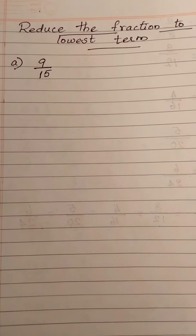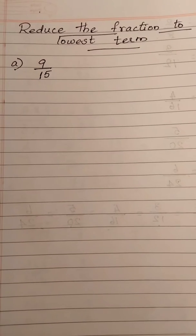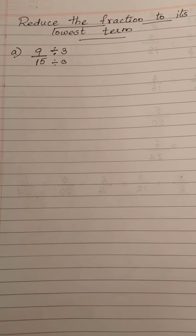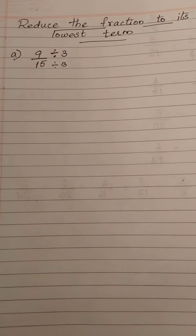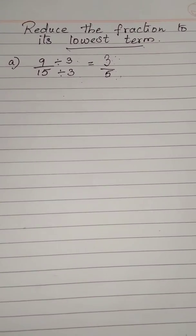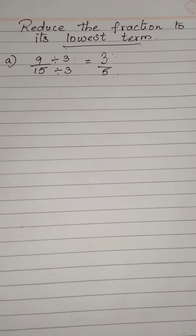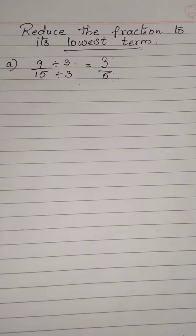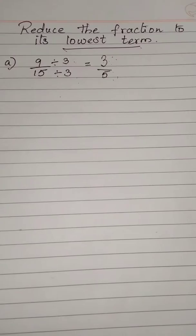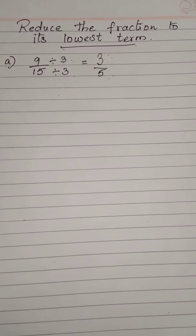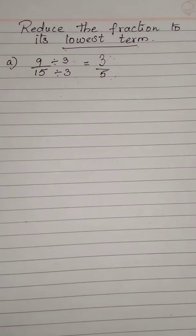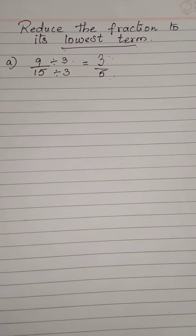Now, let us do some examples. Our first question is 9 by 15. 9 and 15 are commonly divisible by 3. So, I am dividing numerator and denominator by 3. I will get the answer: 3 3s are 9 and 3 5s are 15. Now, just check whether 3 and 5 are commonly divisible by any number. No. So, 3 by 5 is the answer.